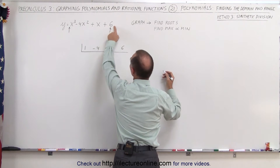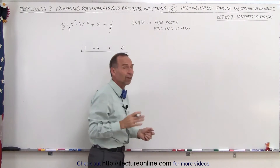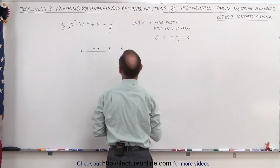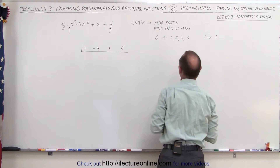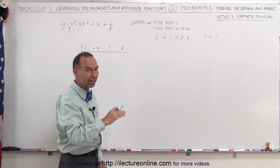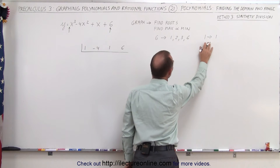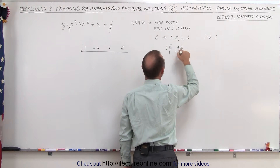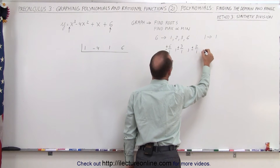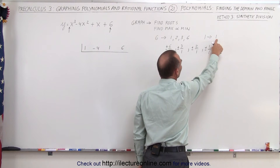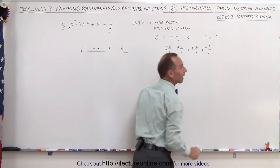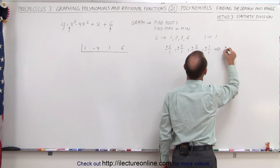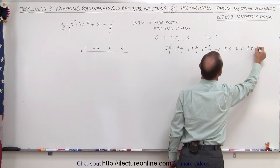We take all the combinations of the factors of the constant term divided by the factors of the leading coefficient. The factors of 6 are 1, 2, 3, and 6, and the factors of 1 is simply 1. So all the possible numbers we can plug in are plus or minus 6, plus or minus 3, plus or minus 2, and plus or minus 1. I like to start with the smallest one and move on to the bigger ones.